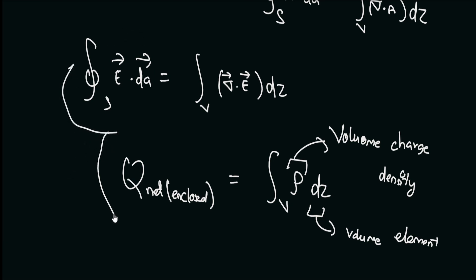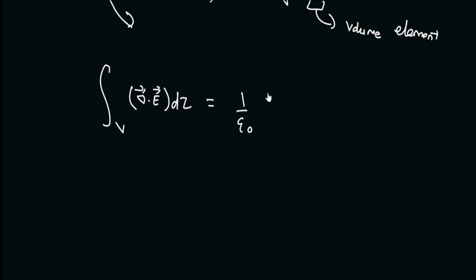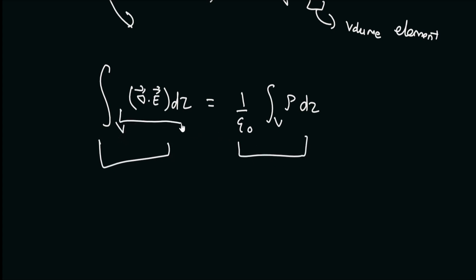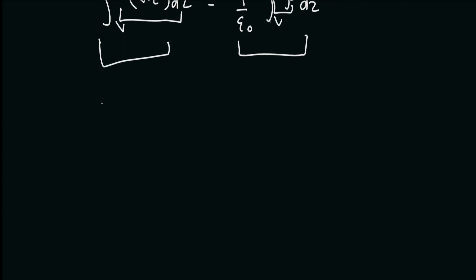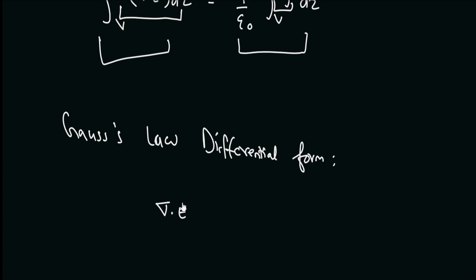Combining these two equations, the volume integral of the divergence of E equals one divided by epsilon-naught times the volume integral of rho d-tau. Since two volume integrals are equal to each other, their integrands must also be equal. Therefore, Gauss's law in differential form is: divergence of E equals rho divided by epsilon-naught.